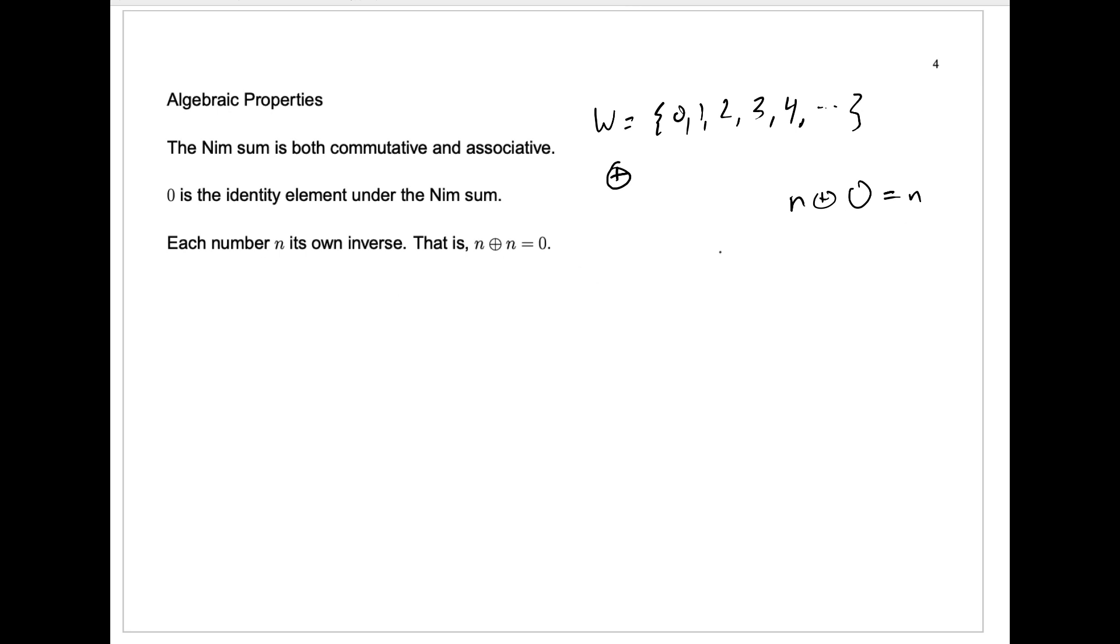Each number n is its own inverse. That's not necessary for being a group, but that's an interesting property of this group. Why is it true that n plus n equals 0? Well, whatever the binary representation of n is, here's just an example. If you take the Nim sum with itself, it'll just be the same thing below it, and when you add up by columns, you'll get 0s in every position. So regardless of what n happens to be, when you Nim sum with itself, you'll get exactly 0.